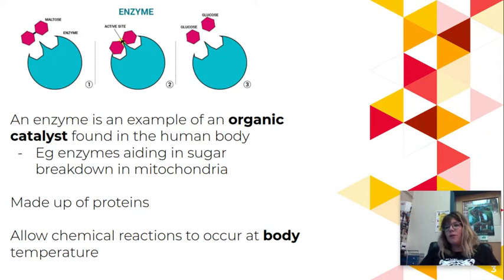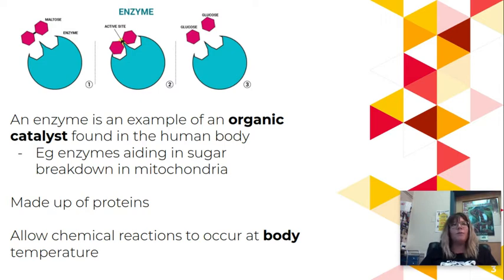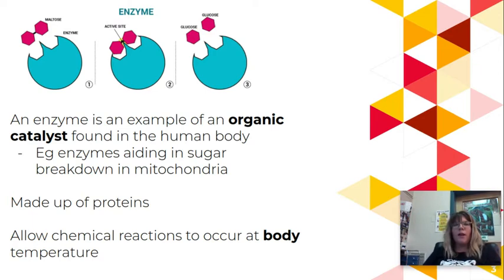Enzymes are made up of proteins, and it's important to understand that enzymes work at an optimal level. When talking about your body, there are temperatures and pHs that are important. Essentially, the enzymes in your body work at an optimal level at a pH of 7 and a temperature of 37 degrees — it doesn't really change.